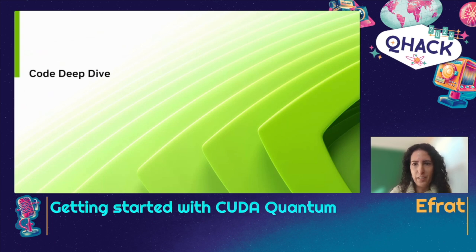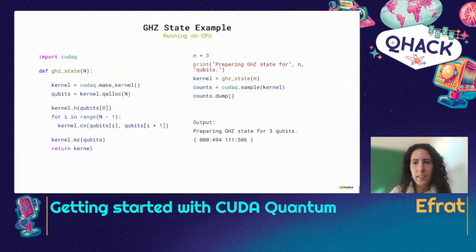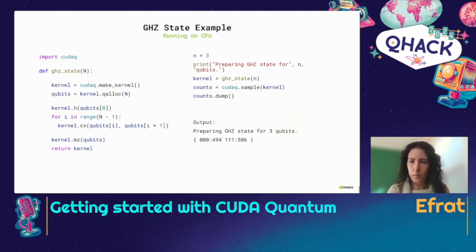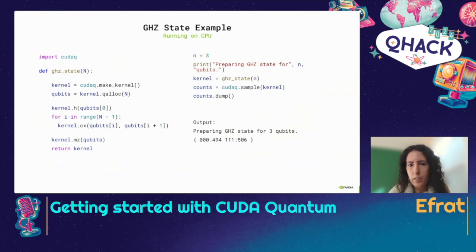Let's dive into some code examples, starting with a simple GHZ state where three or more qubits are entangled. Here you can see the Python code within CUDA Quantum that describes that. The first thing you'll see is something called a kernel — a unit of code that can be compiled and run on various devices. The kernel takes a number of qubits as parameters, entangles them using a controlled-X gate, then performs a measurement using MZ. We call sample over the kernel — sampled 1,000 times by default — and for n equals 3, either all qubits are zero or all are one, with some distribution between samples.